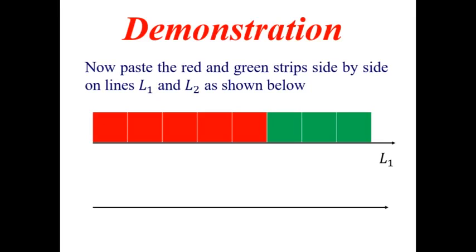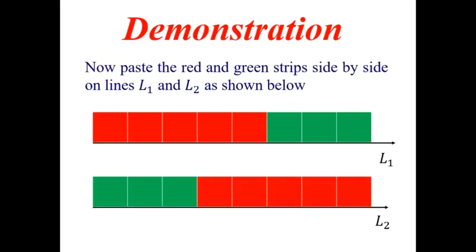Then, the second line, that is L2. Next, we have pasted first the green strip, which contain 3 squares. Then, the red strip, which contain 5 squares.